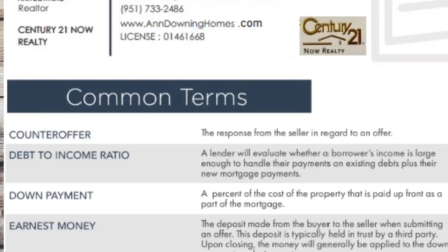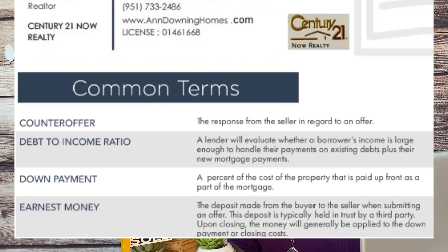Down Payment: A percentage of the cost of the property that is paid up front as part of the mortgage. Earnest Money: The deposit made from the buyer to the seller when submitting an offer. This deposit is typically held in a trust by a third party or an escrow company, and upon closing the money will generally be applied to the down payment or closing costs.